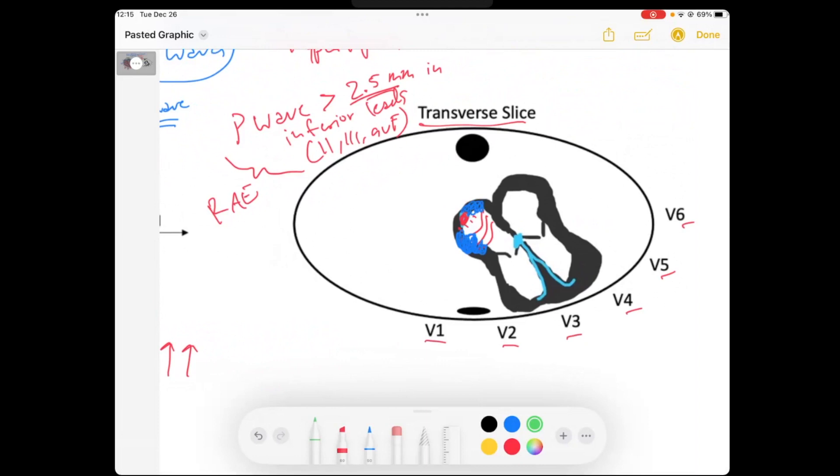then we might actually get some right atrial depolarization that is going more towards the anterior aspect of the chest wall. And so we would also see dominant positive P-waves in V1. And you could say that if those are greater than 1.5 millimeters, that would also be criteria.